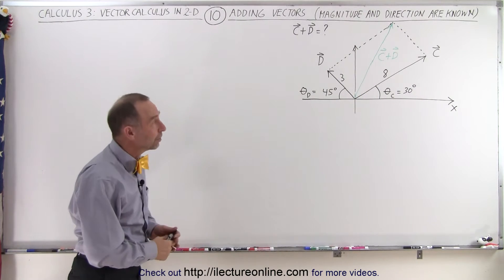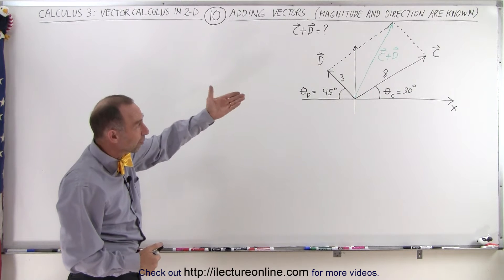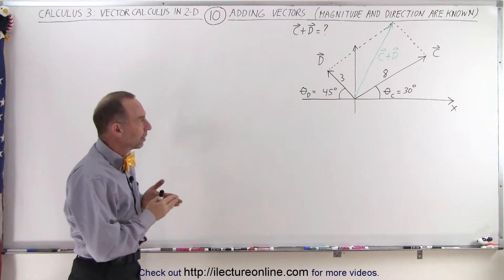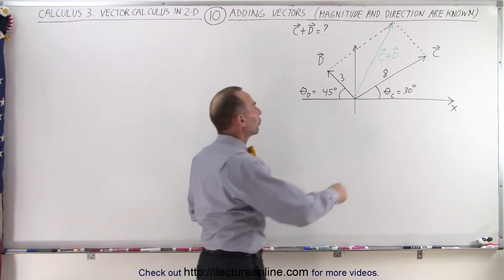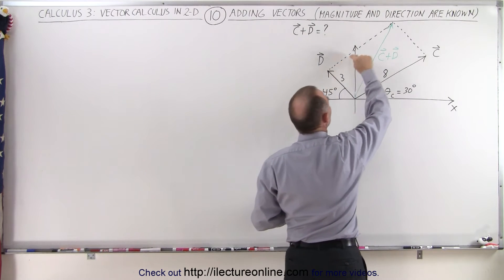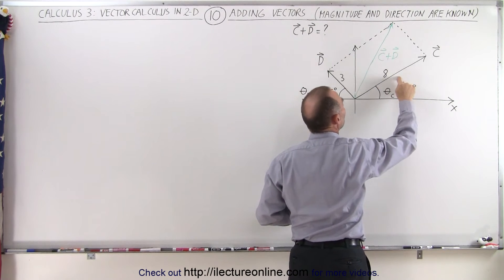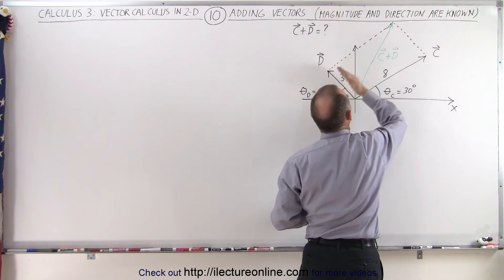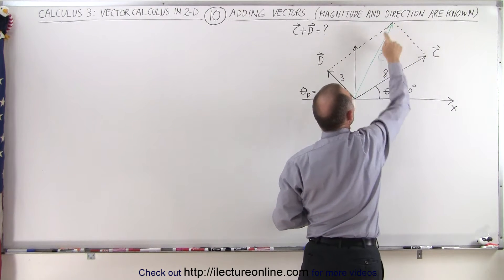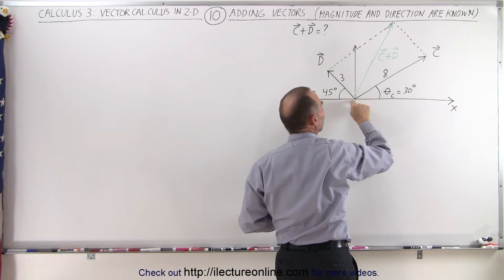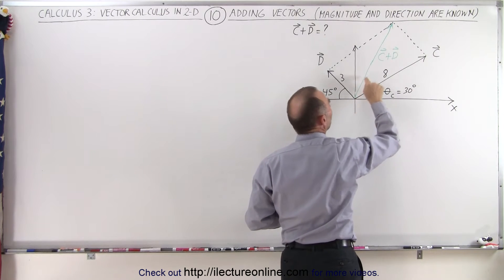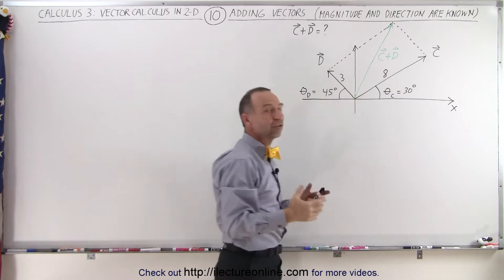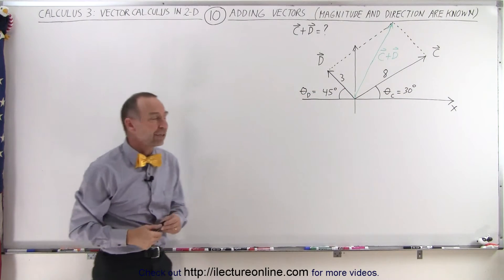Now we need to add them together. Just so we can see some reference, we've already added them together using the method of parallelograms. I go to the tip of vector C and draw a line parallel to vector D, then go to the tip of vector D and draw a line parallel to vector C. When the two meet, I draw a vector from where the two tails start to where the two lines meet — that is the sum of the two vectors graphically.